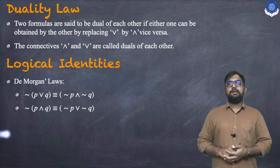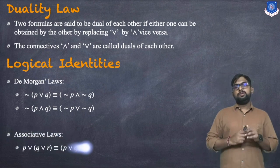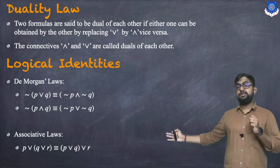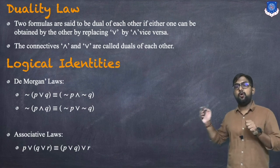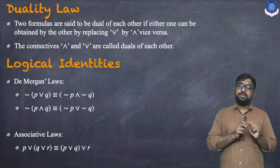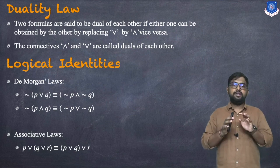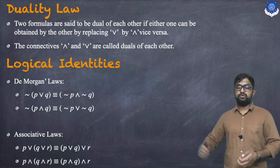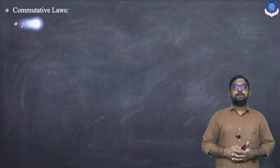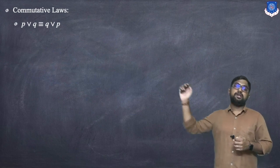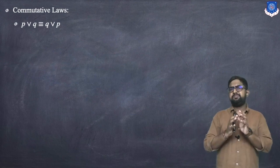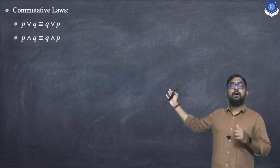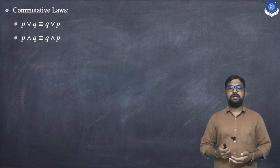De Morgan's laws: ¬(p∨q) ≡ ¬p∧¬q, and by interchanging AND and OR we get the second form. The associative law: p∨(q∨r) ≡ (p∨q)∨r — we can change the brackets. The same holds for AND. The commutative law: p∨q ≡ q∨p — we can change the order and the result won't change. The same holds for AND.